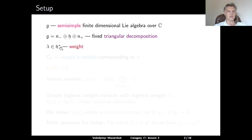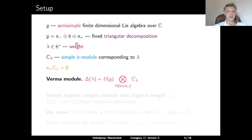For a fixed weight lambda, we can consider the one-dimensional simple H-module C_lambda, on which an element H in H acts via the scalar prescribed by lambda, that is, by lambda evaluated at H. We further define that N plus kills C_lambda, giving C_lambda the structure of a module over the Borel subalgebra H plus N plus of G. The Verma module Δ(λ) is defined as the module induced from this one-dimensional module over the Borel subalgebra to the whole of G using the usual tensor induction.